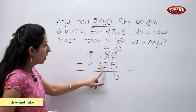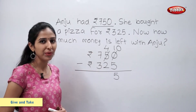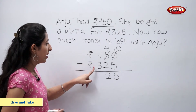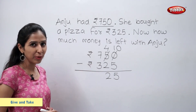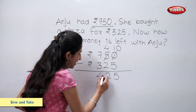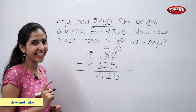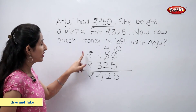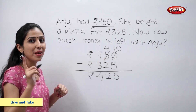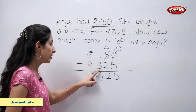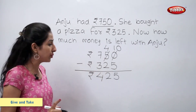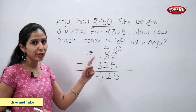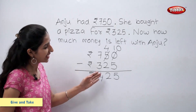4 minus 2 is equal to 2. 7 minus 3 is equal to 4. Let's write the rupee sign. So, rupees 750 minus rupees 325 is equal to rupees 425. So now, Anju is left with rupees 425.